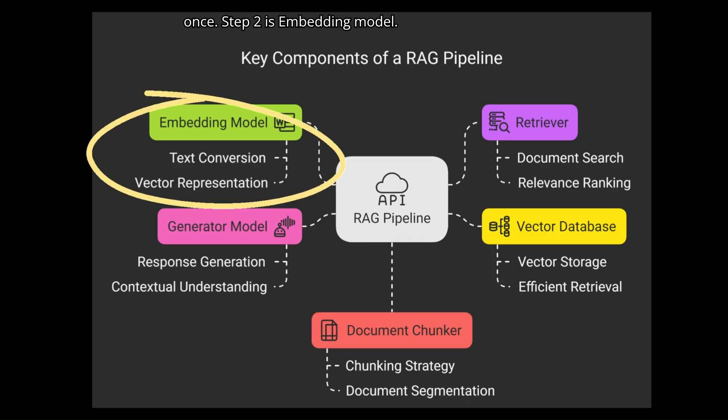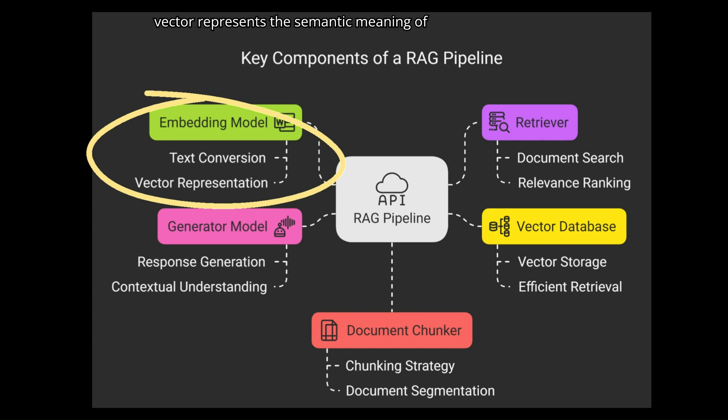Step 2 is the Embedding Model. Each chunk is then converted into a dense vector using an embedding model. This vector represents the semantic meaning of the text, allowing us to perform similarity-based searches later.